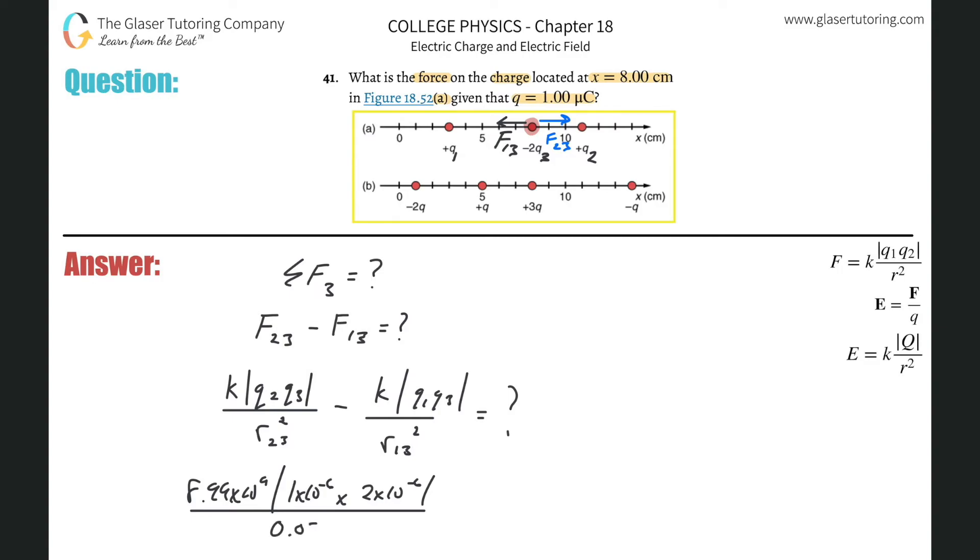Minus the next guy. So this is 8.99 times 10 to the ninth, absolute value of, it's going to be q1, and that's a positive q, so it's basically the same thing, 1 times 10 to the minus 6, times then q3. Don't worry about the magnitude, 2 times 10 to the minus 6, all then divided by the distance between them.